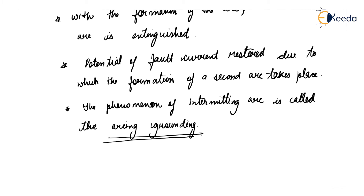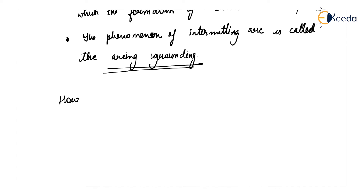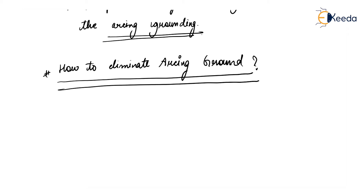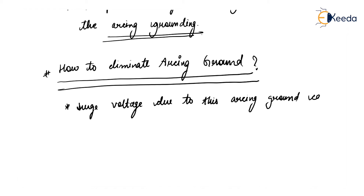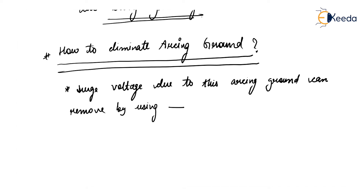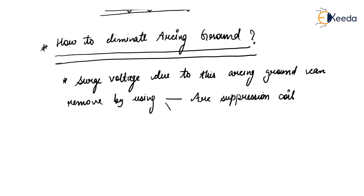Now, how do we eliminate arcing grounding? The surge voltage due to this arcing ground can be removed by using an arc suppression coil or Peterson coil. Through these, we can remove the arcing ground.